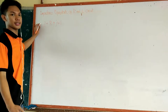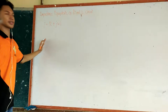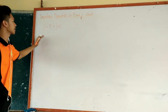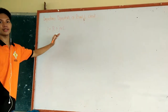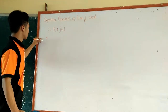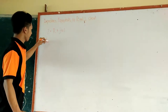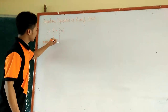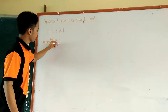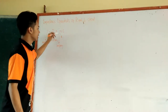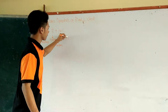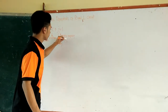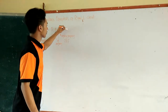Good morning everyone. Let's have a review about impedance equivalence of an RL circuit — resistance and inductance. The formula for the impedance of this circuit is Z equals R plus jωL, where Z is our impedance, R is resistance, j is imaginary, ω is our angular frequency with the formula 2πF, and L is our inductance.